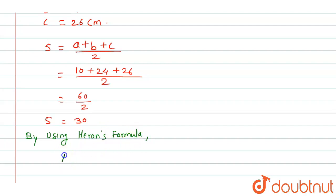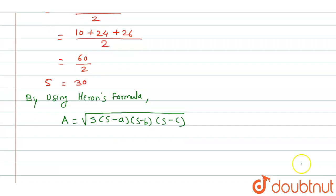By using Heron's formula, Area = √[s(s-a)(s-b)(s-c)]. Substituting the values: √[30(30-10)(30-24)(30-26)].